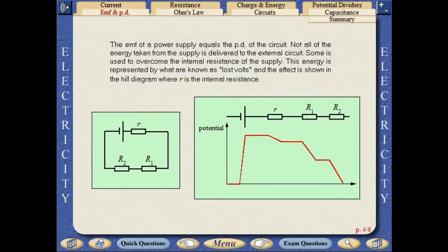The EMF of a power supply equals the potential difference of the circuit. Not all of the energy taken from the supply is delivered to the external circuit. Some is used to overcome the internal resistance of the supply. This energy is represented by what are known as lost volts, and the effect is shown in this Hill diagram, where R is the internal resistance.